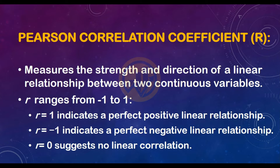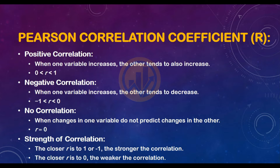The R ranges from minus 1 to 1. R equal to 1 indicates a perfect positive linear relationship. R equal to 0 suggests no linear correlation. Positive correlation: when one variable increases, the other tends to also increase, where 0 is less than R less than 1. Negative correlation: when one variable increases, the other tends to decrease, where minus 1 is less than R less than 0. No correlation: when changes in one variable do not predict changes in the other, R equals 0.